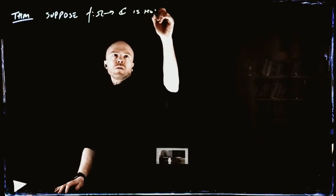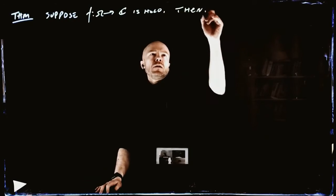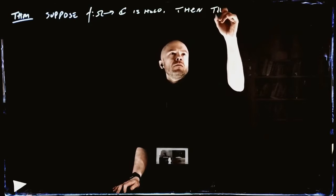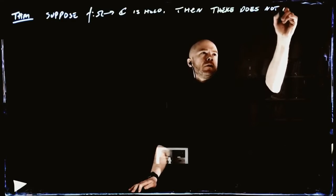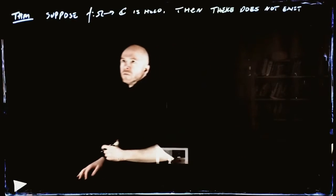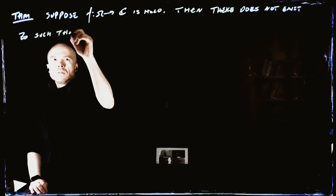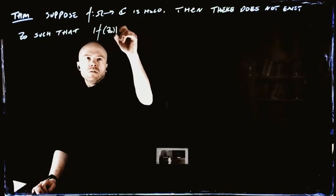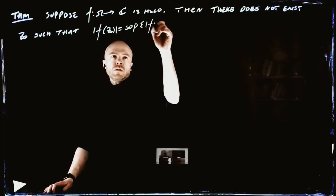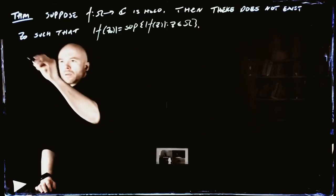So f from omega is holomorphic. Then there does not exist a Z0 such that the absolute value of Z0 is equal to the supremum of f of z, for z belonging to omega. Proof.